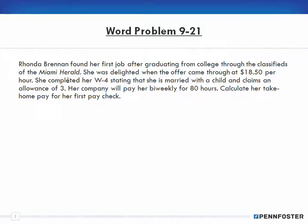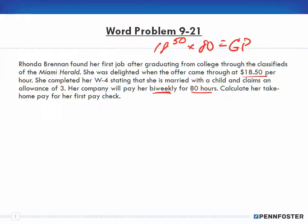We're going to start with Rhonda Brennan, who found her first job after graduating from college through the classifieds of the Miami Herald. She was delighted when the offer came through at $18.50 per hour. She completed her W-4 stating that she is married with a child and claims an allowance of three. Her company will pay her bi-weekly for 80 hours. So $18.50 times 80 hours gives us $1,480 as her gross pay.